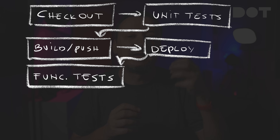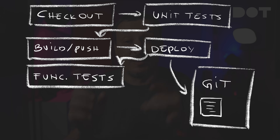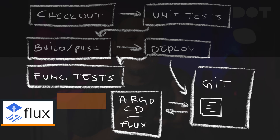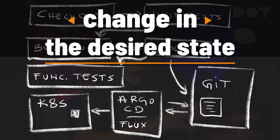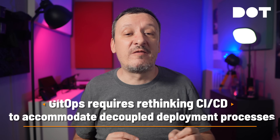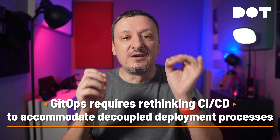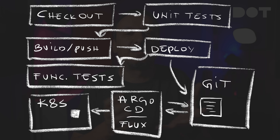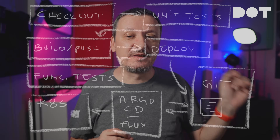If you're practicing GitOps, the step that deploys the code is actually not deploying anything, but instead it is making changes to manifests and pushing them to a repo. From there on, Argo CD or Flux would realize that there is a change to the desired state and make changes to the cluster so that the actual state is the same. GitOps requires rethinking CI-CD to accommodate decoupled deployment processes.